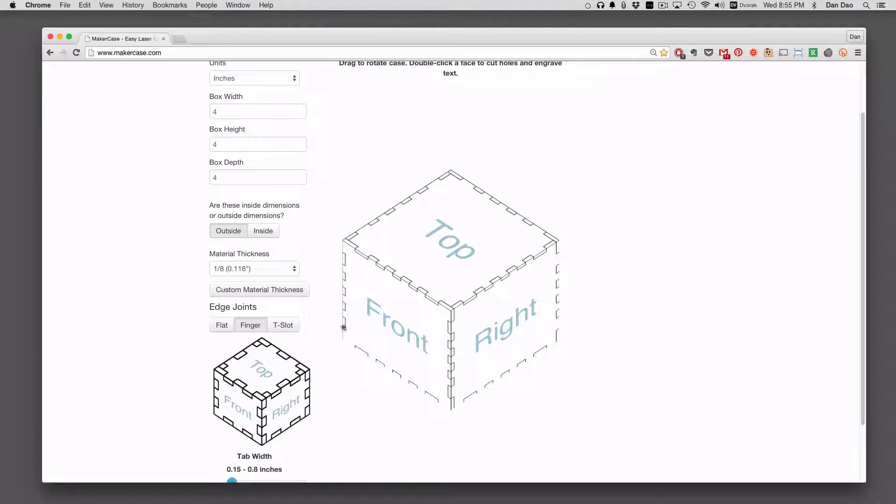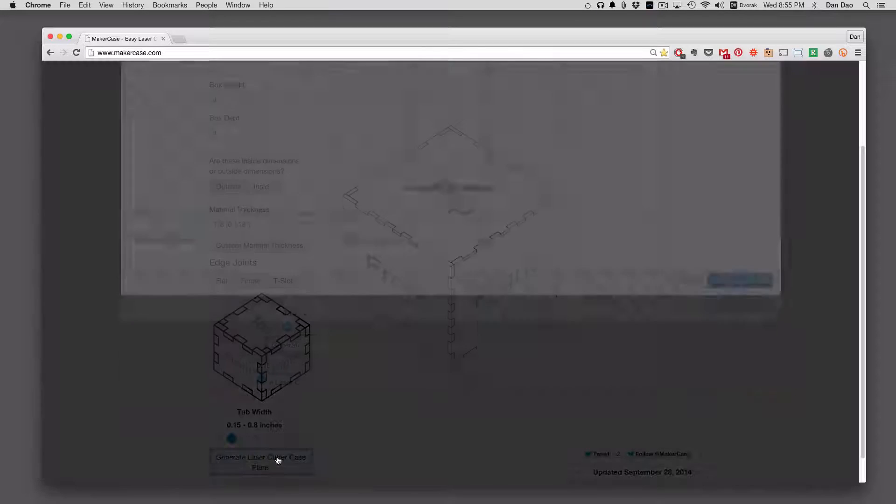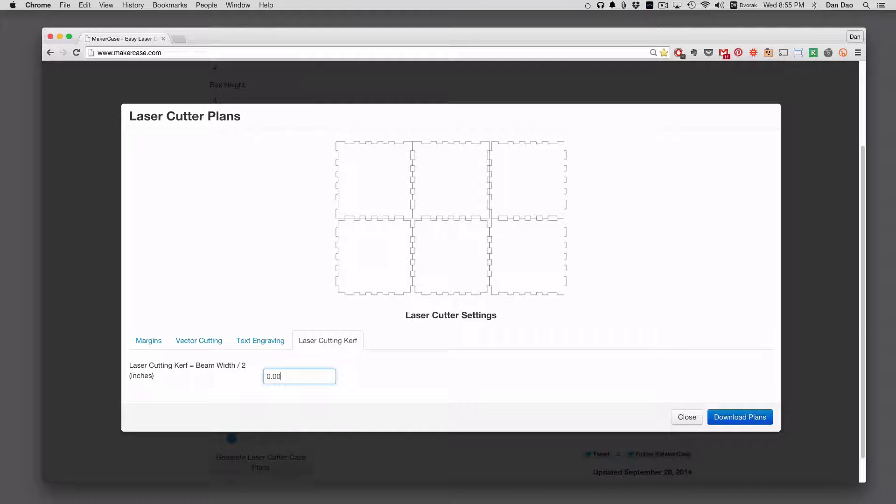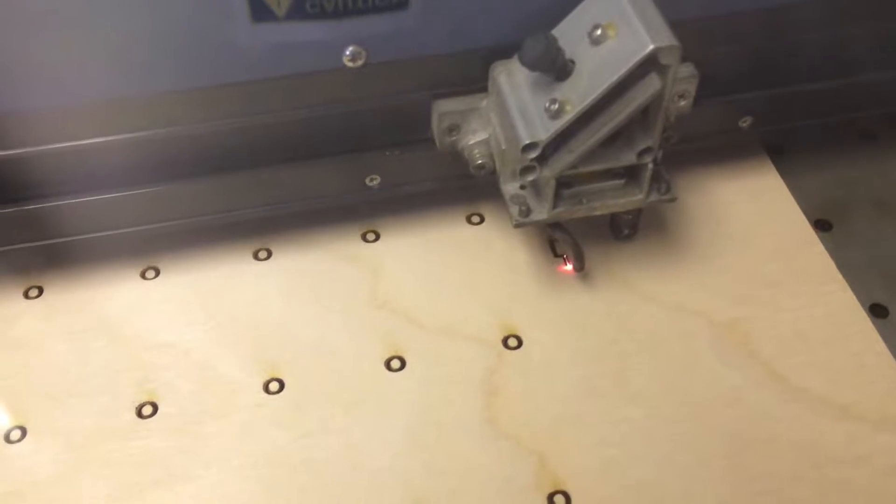First of all we'll do a 4x4x4 box and then I will choose finger joints and then from there I'm going to go into the extra settings and define my kerf size. Here we're going to use 0.005. I'll then download this file and then cut it out on the material with my laser cutter.